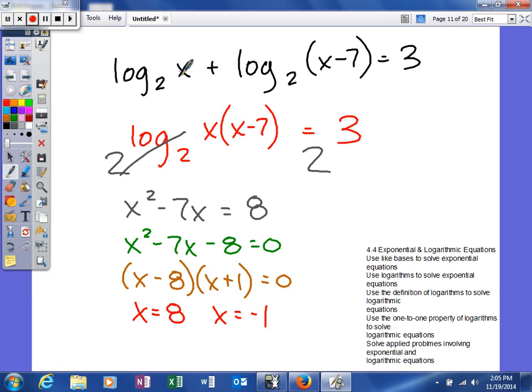Over here, when I plug in 8, it says 8 minus 7 is 1. Log base 2 of 1 is 0. So 3 plus 0 gives me 3. So not only does it check, but it also shows that I can take the logarithm of both of those.